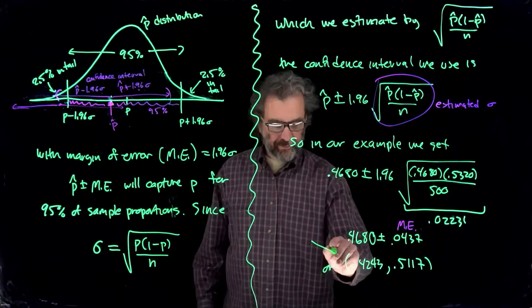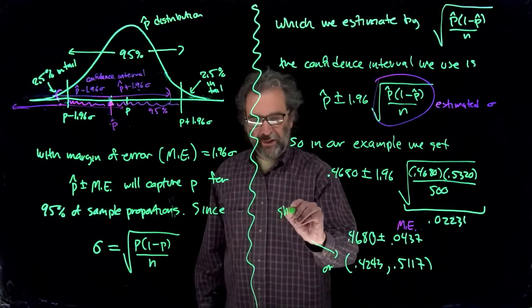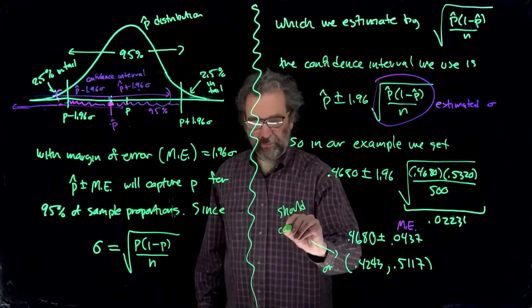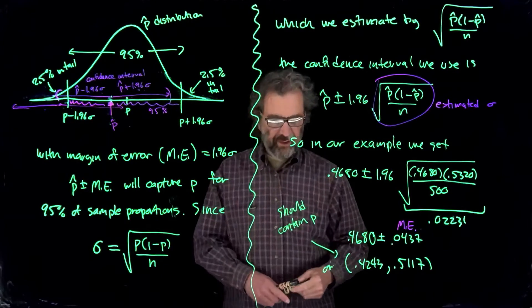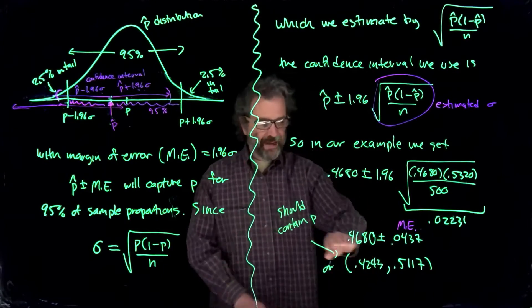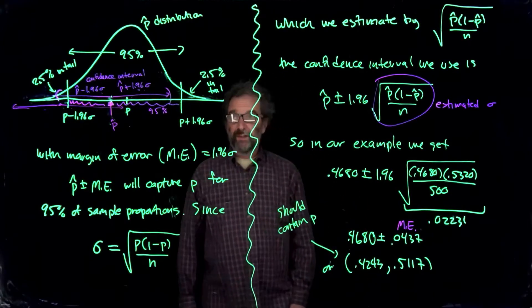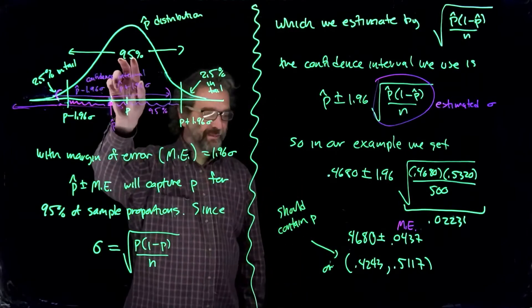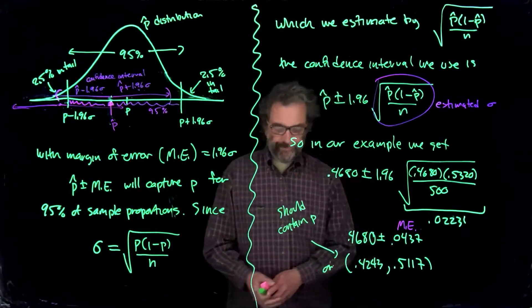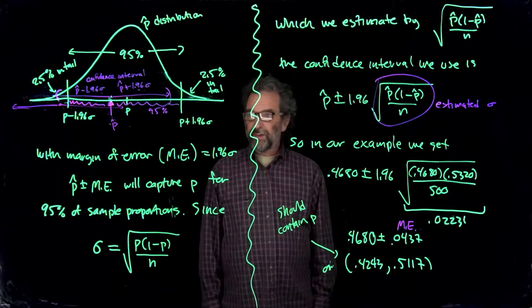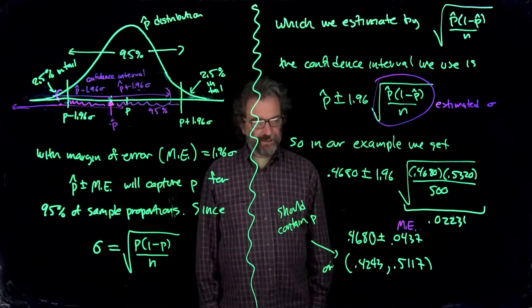So we say this should contain p. At least most of the time we do this process, the interval contains p. So we're thinking that one probably contains p. It's that 95% that makes us think that. And then we go, well, wait a second, so okay, that's fine. But I was wondering whether this ballot measure might pass.